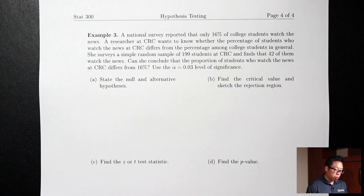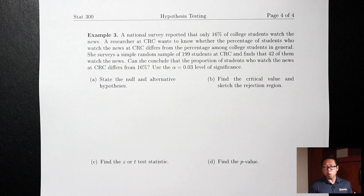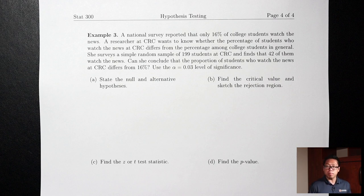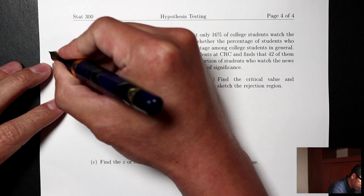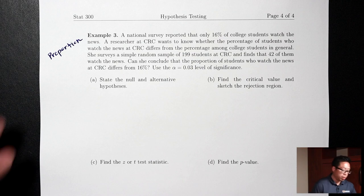Example 3: A national survey reported that only 16% of college students watch the news. A researcher at CRC wants to know whether the percentage of students who watch the news at CRC differs from college students in general. She surveys a simple random sample of 199 students at CRC and finds 42 of them watch the news. Can she conclude the proportion at CRC differs from 16%? Use alpha equals 0.03. There's no mention of mean or standard deviation, so this is a proportion question — we'll use Z's.